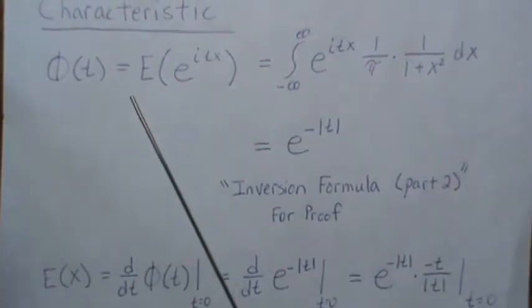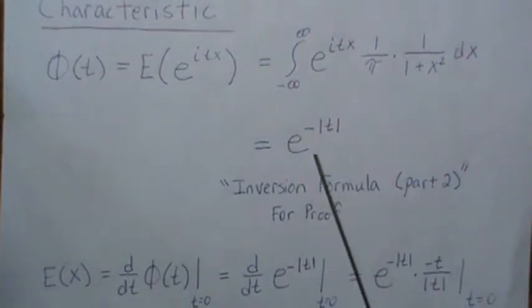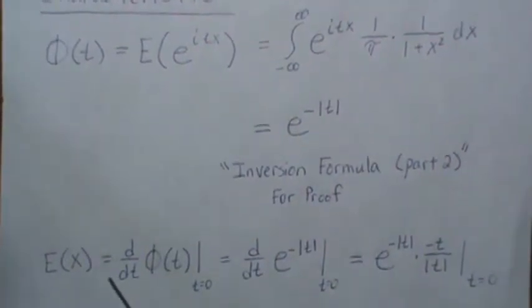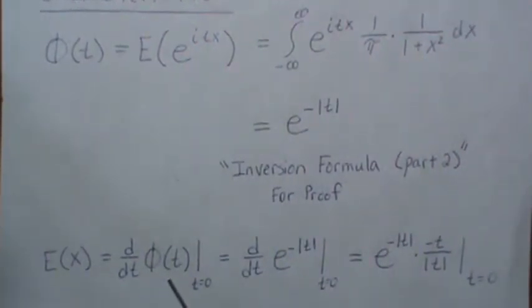Now let's find the first moment based on the characteristic function. That says take the derivative of the characteristic function evaluated at 0. So the derivative evaluated at 0 is e^(-|t|) times (-t/|t|) evaluated at 0.